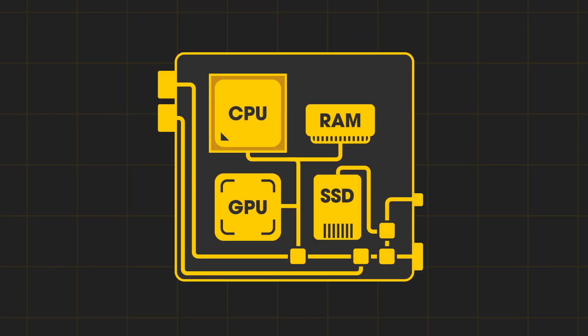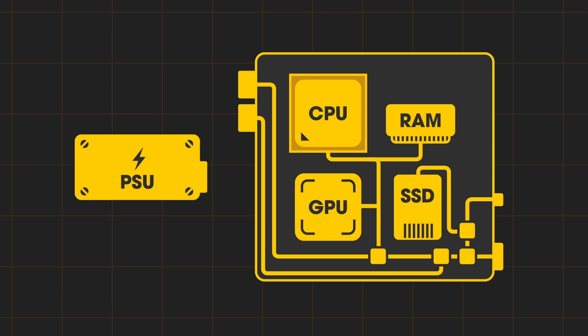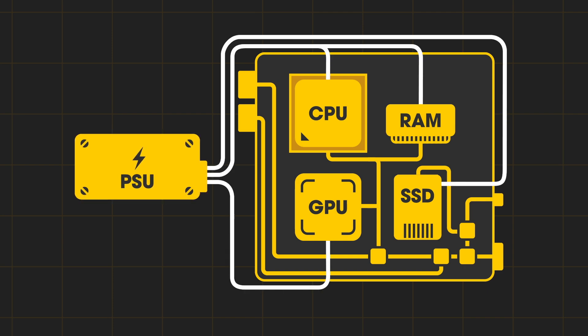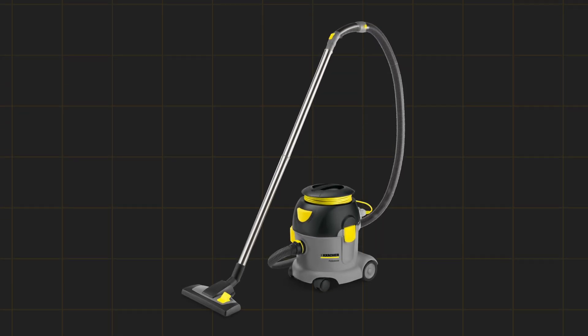We still need to power the system with a power supply unit — a PSU. The most power-hungry components are the CPU and the graphics card, so the PSU needs to supply enough electricity for running both at maximum performance, and then some. To give you an idea, a current high-end processor needs up to 300 watts, and a high-end GPU an additional 450 watts — about as much as a high-powered vacuum cleaner.